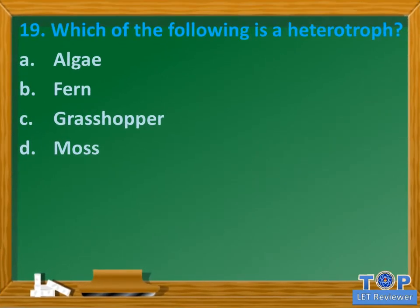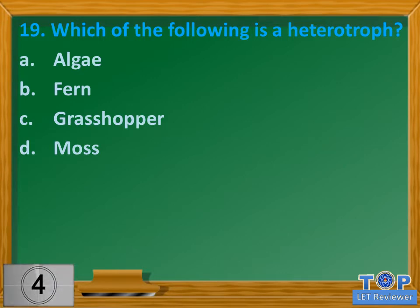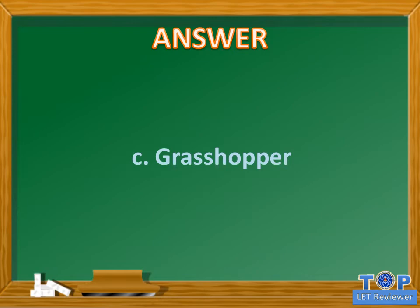Question number 19. Which of the following is a heterotroph? A. Algae. B. Fern. C. Grasshopper. D. Moss. Answer: C. Grasshopper.